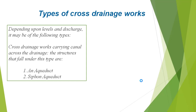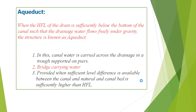The first category is cross-drainage work carrying the canal across the drainage. The structures that fall under this category are the aqueduct and siphon aqueduct. In an aqueduct, when the high flood level (HFL) of the drain is sufficiently below the bottom of the canal such that drainage water flows freely under gravity, the structure is known as an aqueduct. In this, canal water is carried across the drainage in a trough supported on piers.